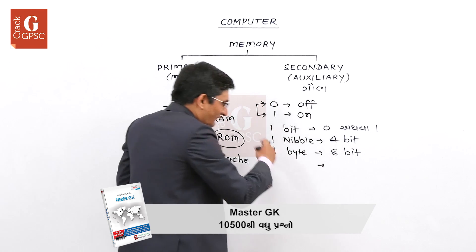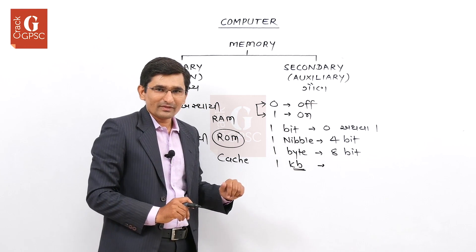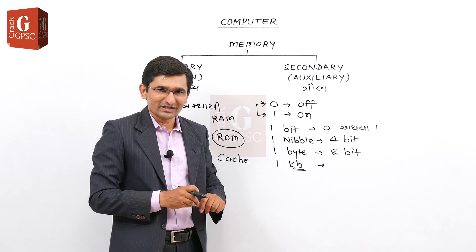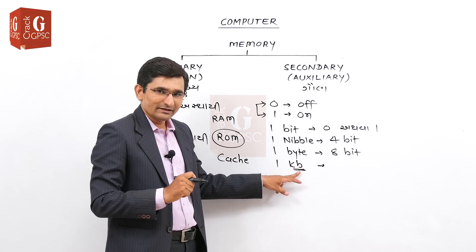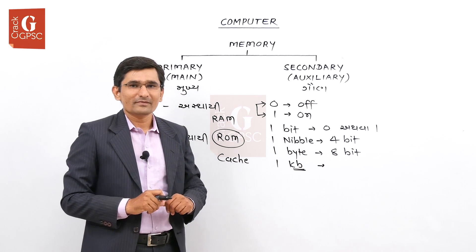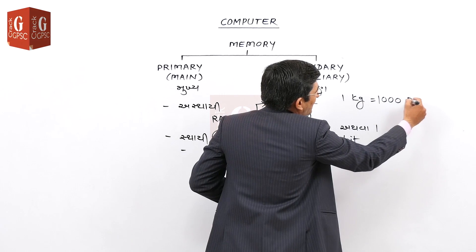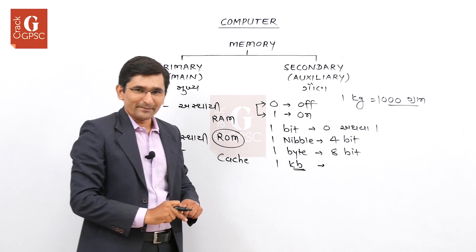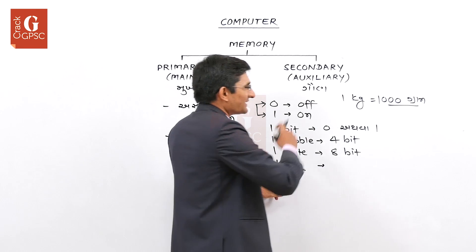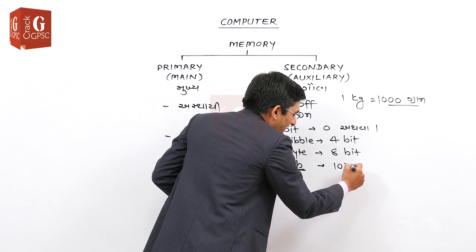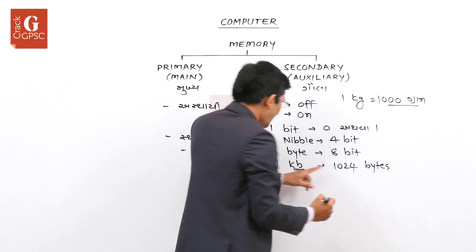હવે એવા વધારે બાઇટ કરો: 1,000 કરતાં વધારે બાઇટ ભેગા થાય ત્યારે એને આપણે કિલો કઈશું — એક કિલો બાઇટ. કિલો એટલે, કમ્પ્યૂટર ની ભાષામાં, 1,024 — એ 1,024 બાઇટ ભેગા થાય ત્યારે એ કિલો બાઇટ બને.